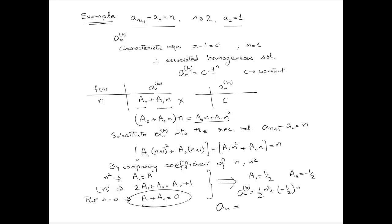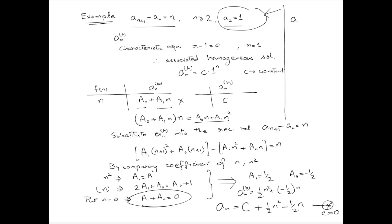So the particular solution is (1/2)·n² minus (1/2)·n. The complete solution is a_n equals c (the homogeneous part) plus (1/2)·n² minus (1/2)·n. Applying the initial condition a_2 equals 1, we substitute n=2 and solve to find the constant c equals 0. Hence the final solution of this recurrence relation is a_n equals (1/2)·n·(n minus 1).